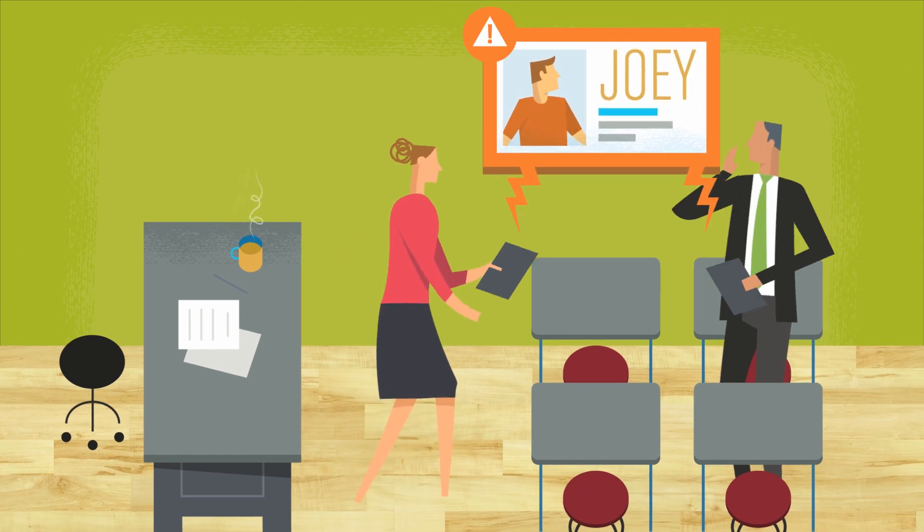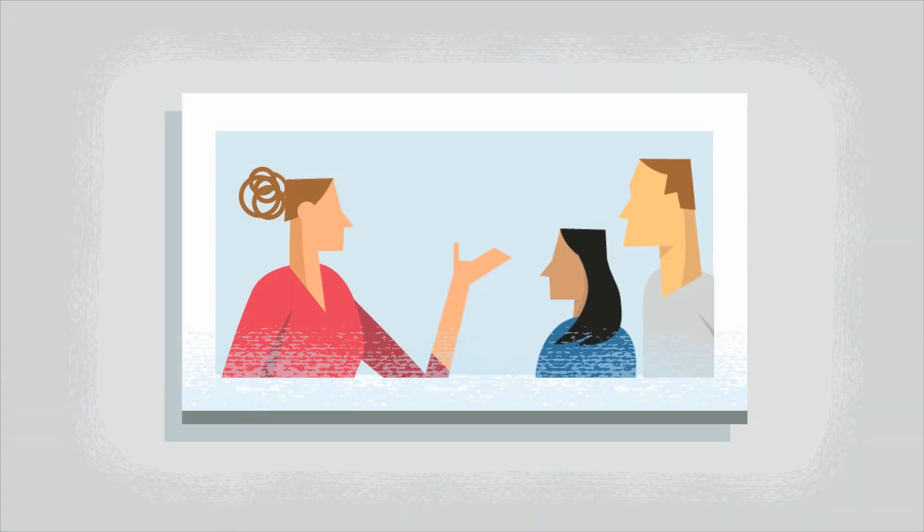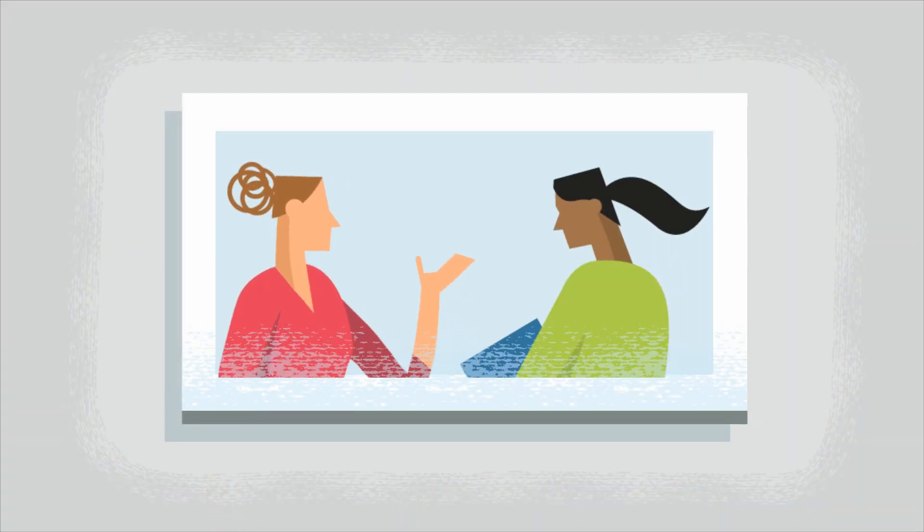Midway through the year, Ms. Bullen sees that Joey is at risk of failing. Ms. Bullen works with Joey, his parents, and his other teachers to get him on track.